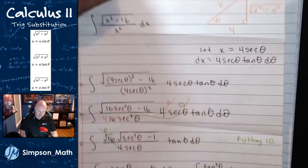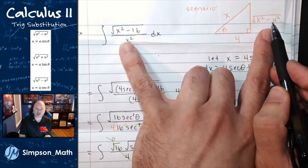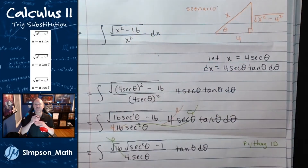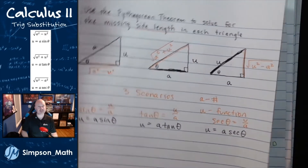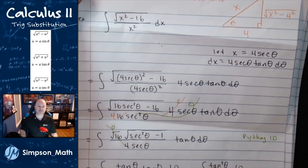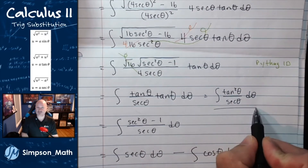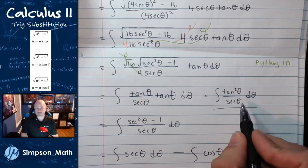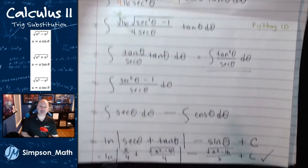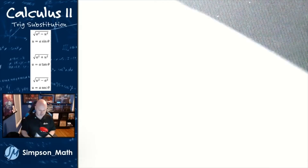Let me walk through that problem quickly one more time. I saw the integral, saw the square root, knew it was trig substitution. I drew the triangle with that square root, thinking I need x over a — and so I drew the secant scenario. According to the substitution rule, I let x equal a secant theta, made my substitution, used Pythagorean identities to simplify, integrated the resulting trig functions, and then converted back to x using the triangle.